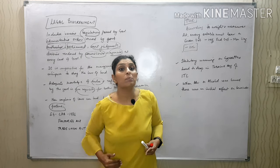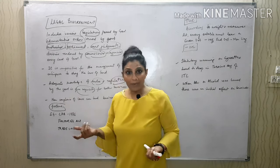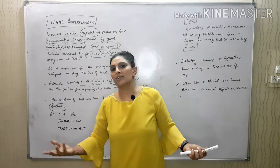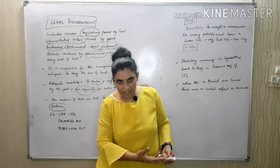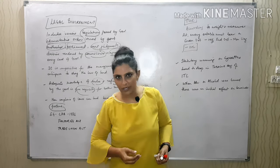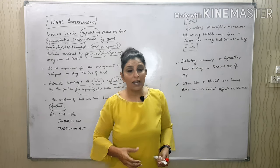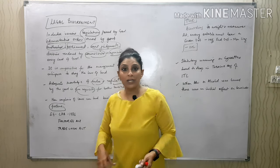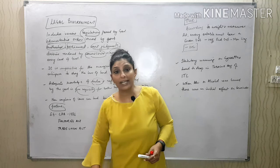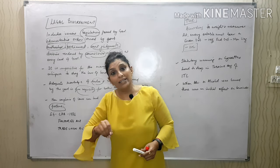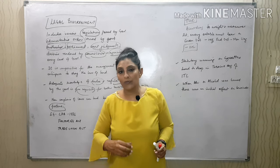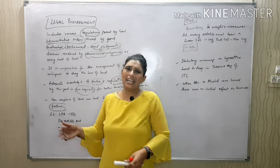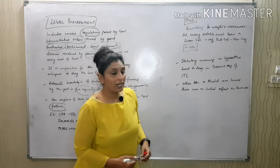When consumers were being exploited by business houses, the government introduced the Consumer Protection Act 1986 — which we'll study in the last chapter. The Factories Act protects workers' interests and rights. The Trade Union Act ensures trade union leaders and workers who fight for rights have proper written rights, so management cannot mistreat them. Many such acts were passed.